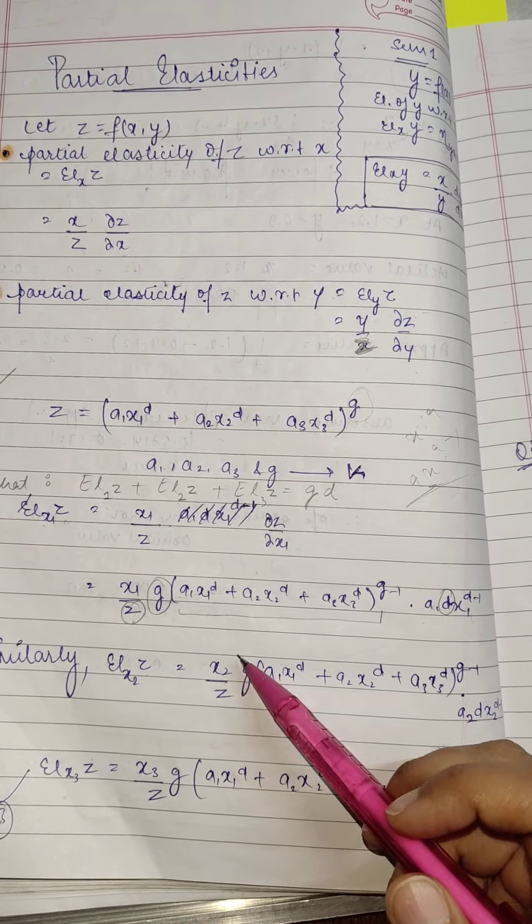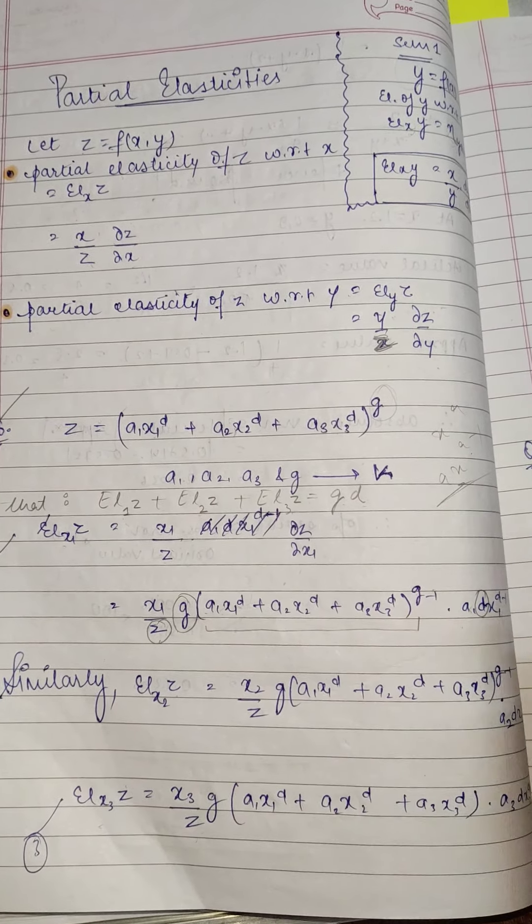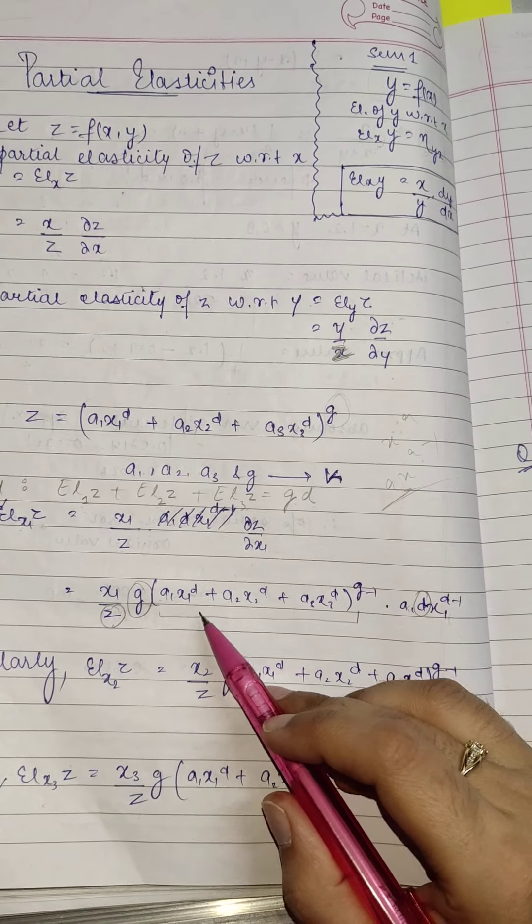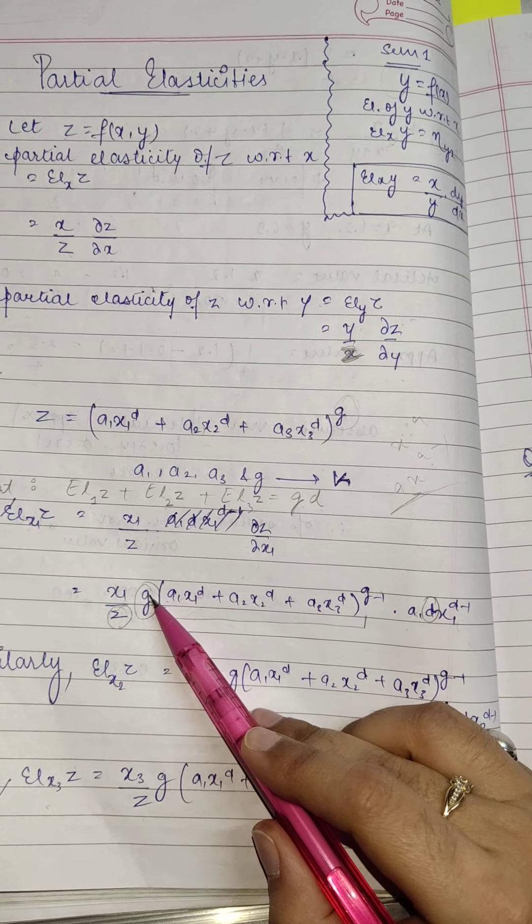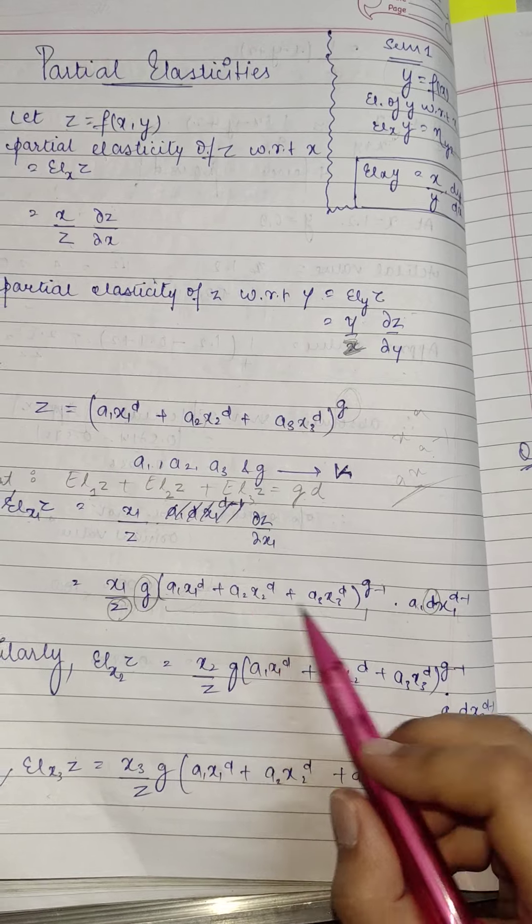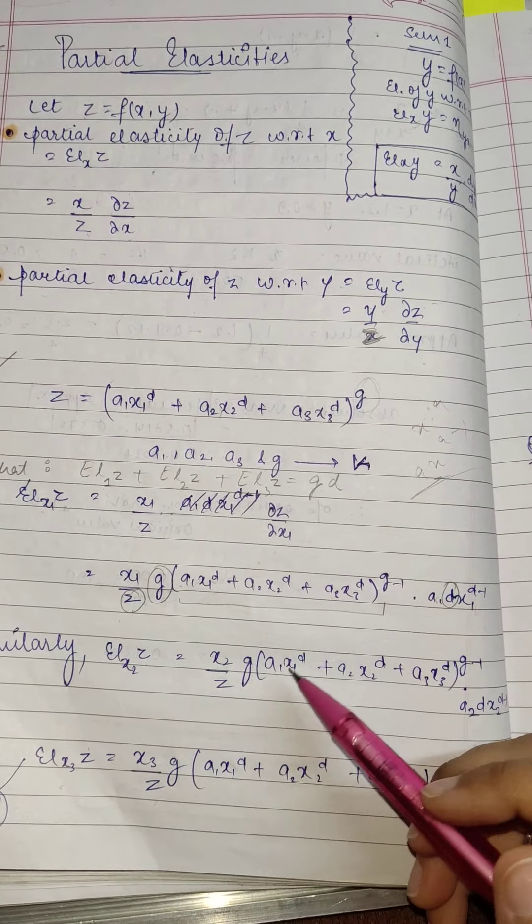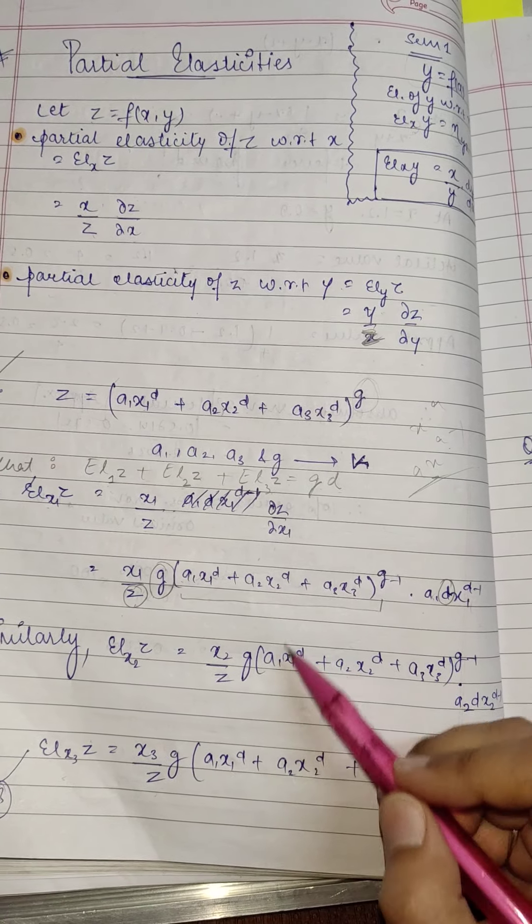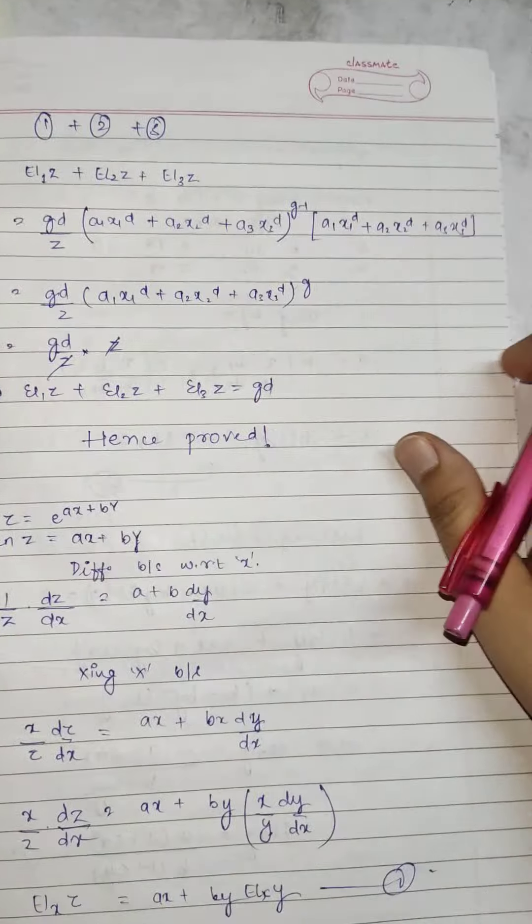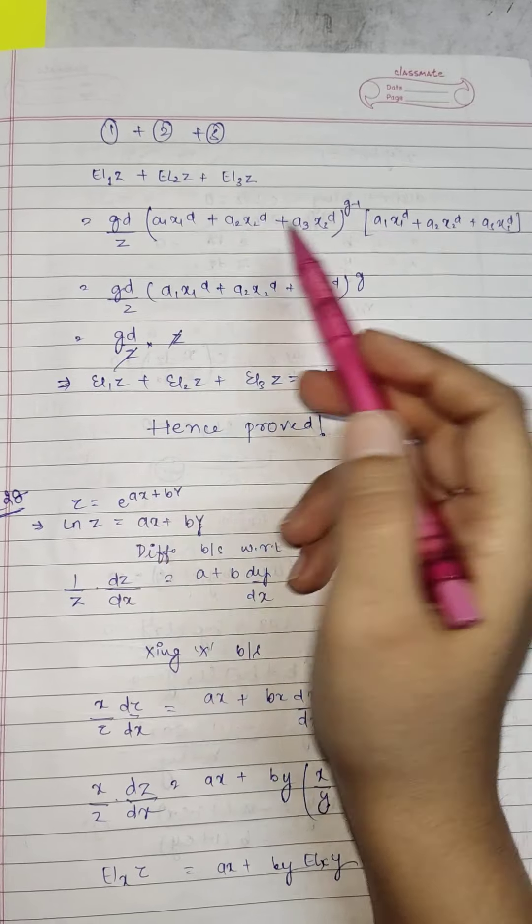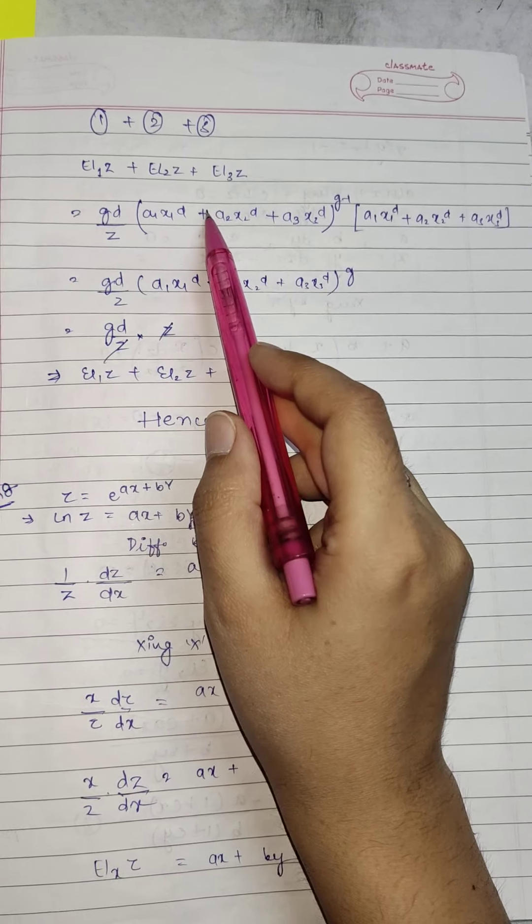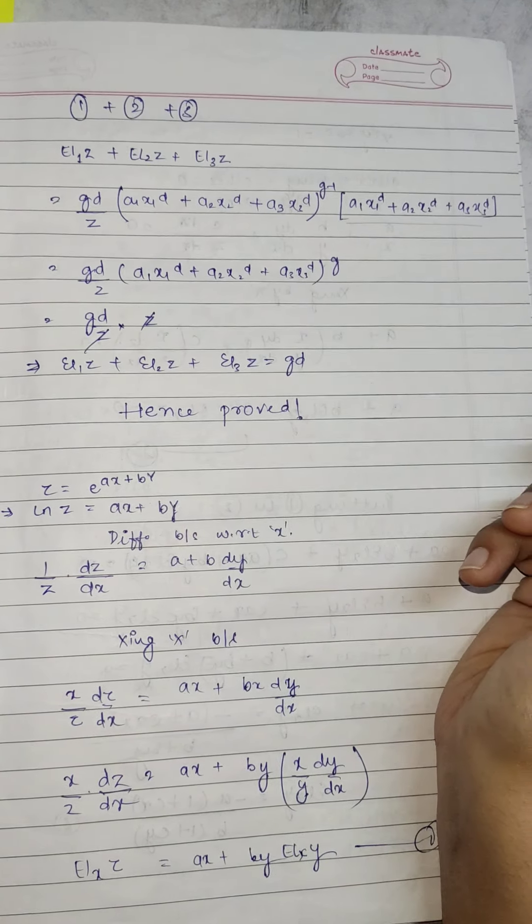Now working out their sum would mean you can pluck out the common terms. Now let's look for the common terms. I've circled them out: g upon z and this particular base along with d. All of these will come out to be common from this particular sum. So I've written it over here that adding 1 plus 2 plus 3 will give you, taking the common things outside, and this will remain in the inside.